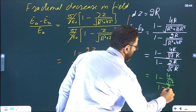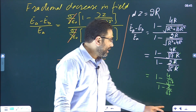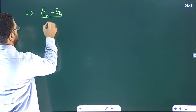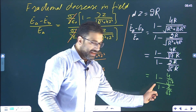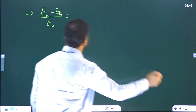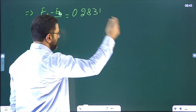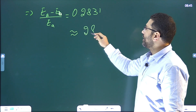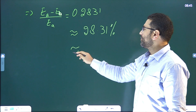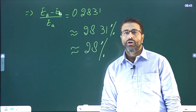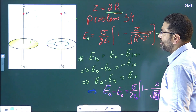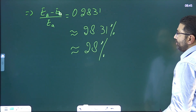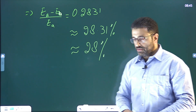So we are left with (1 minus 4 divided by root 17) divided by (1 minus 2 divided by root 5). Working this out gives approximately 0.2831, so the fractional decrease is about 0.28, meaning the percentage decrease is approximately 28.3%, roughly 28%. By removing the inner part of the disk, the electric field at point P decreases by about 28%.